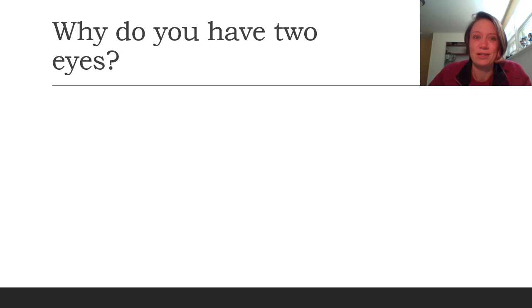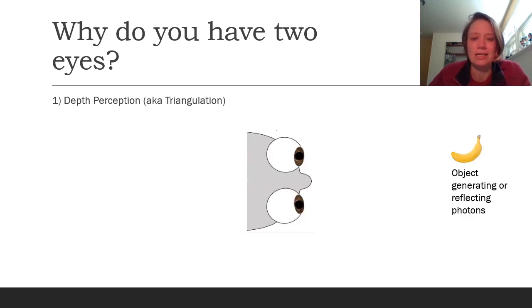So why do we have two eyes then? Well many of you probably know the answer to this question already. It's something known as depth perception. Another name for this in geometry is called triangulation. The idea is you've got two eyes. Objects around you are generating light or they're reflecting light. The banana is probably not generating its own light but it is reflecting the Sun's light. So it's sending these photons off in all directions.